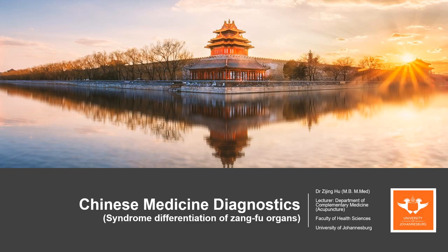That's why we keep introducing additional differentiation methods — such as the disease nature differentiation, covering qi disorder, blood disorder, fluid disorder, and yin and yang disorder. Until now we know the cause of the disease and what happened to the patient, but even combining these three differentiation methods, we still don't know where the disease is located or which organs are affected. That information is what we study in the syndrome differentiation of Zangfu organs — from this differentiation we will know exactly which organ is affected and what the cause is.